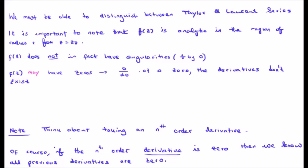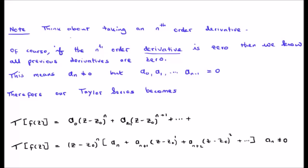We must be able to distinguish between Taylor and Laurent series. Small f(z) is analytic in the region of radius r from the pole z equals z_0, and does not have singularities. However f(z) may have zeros, such as zero over something non-zero. At a zero the derivatives don't exist. If the nth order derivative is zero, then all previous derivatives are zero, meaning a_n is non-zero but all preceding ones are, and our Taylor series becomes the expression at the bottom of the screen.